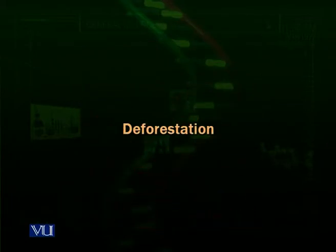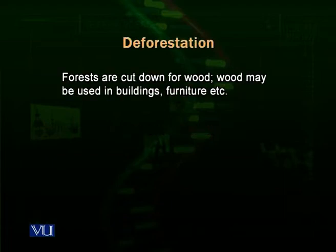Then deforestation — deforestation is also a big problem for ecological systems, the ecosystems. Deforestation means cutting down the forest. Human beings need wood for different uses: it is used in making furniture, buildings, doors, windows, and it is also used as firewood. Human beings cut down the forest for wood, which is very disastrous for the ecosystem.